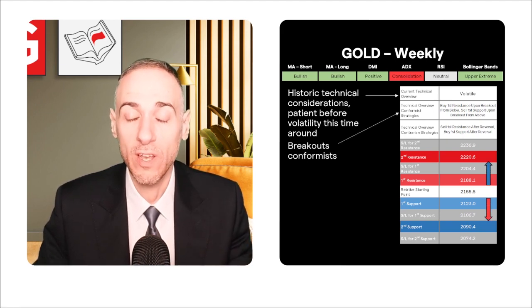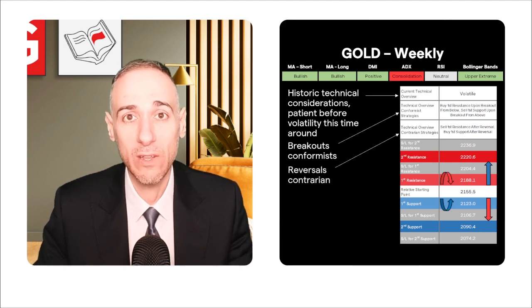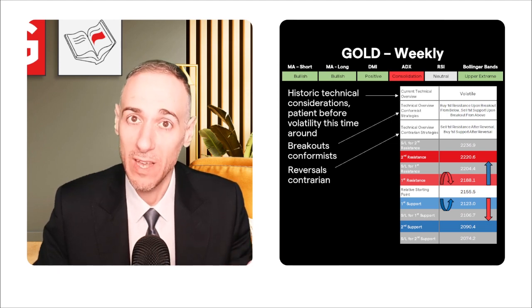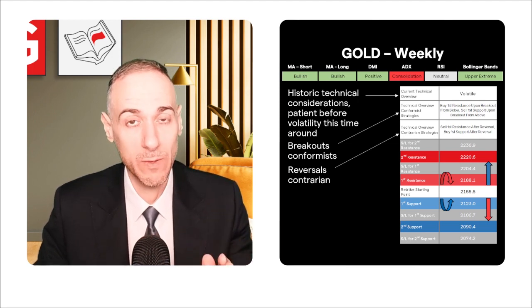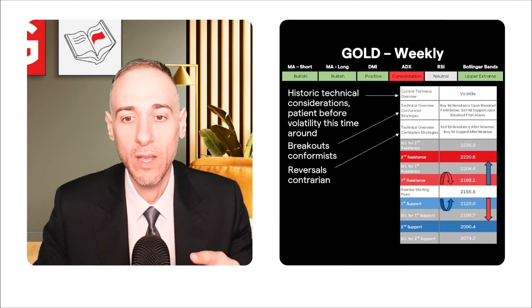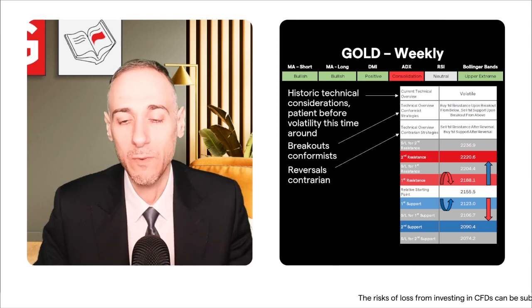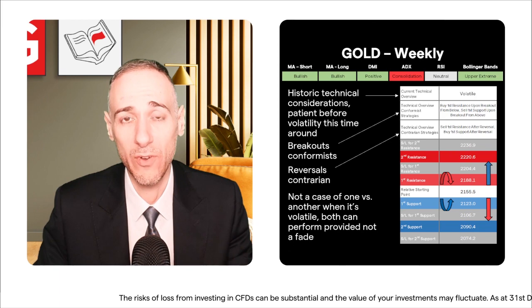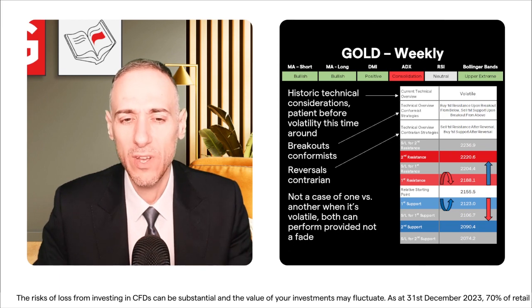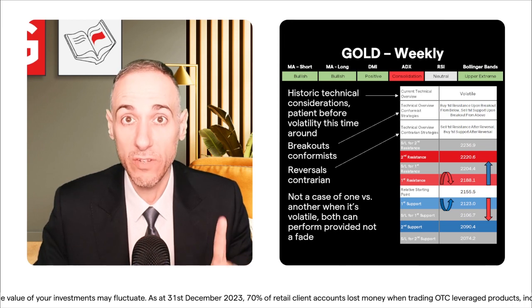Under a volatile overview, conformist strategies anticipate that levels won't hold, so they go for breakout strategies — buy breakouts off the first resistance or sell breakouts off the first support. Contrarians go for reversals: sell the first resistance after a reversal. You don't want to fade the move when volatility is elevated — you'll get stopped out quickly. Wait until price breaches a level, then as it comes back, initiate the trade accordingly, with added caution for the extra volatility.